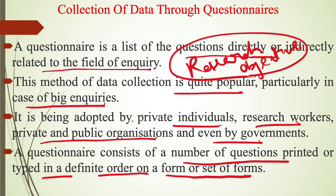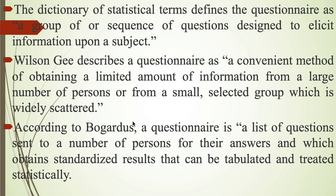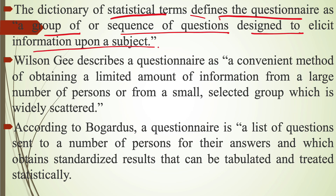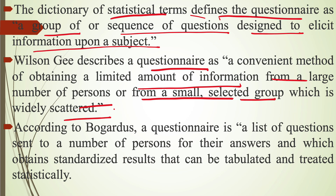The Dictionary of Statistical Terms defines the questionnaire as a group or sequence of questions designed to elicit information upon a subject. According to Wilson G, a questionnaire is a convenient method of obtaining a limited amount of information from a large number of persons, or from a small selected group which is widely scattered.